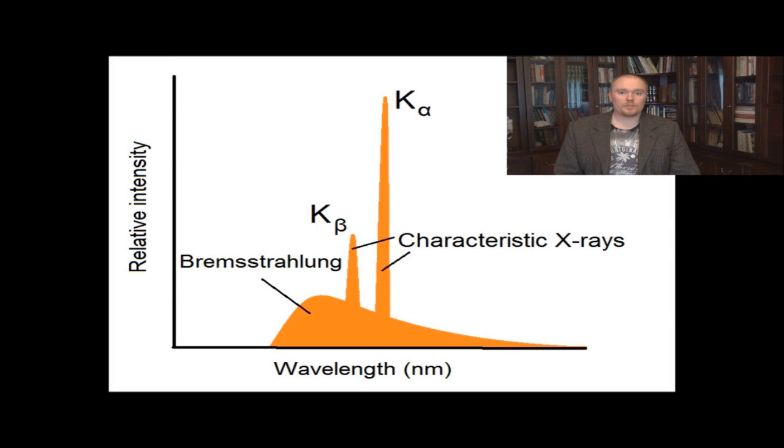The emitted radiation consists of two components: Bremsstrahlung and characteristic x-rays.